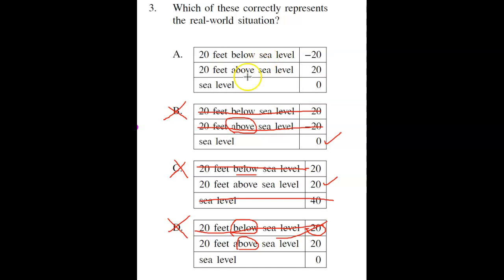When I look at A, it says 20 feet below sea level is a negative. Okay, so that one works. 20 feet above sea level is a positive. That one works. Sea level is at 0. That one works. So for this problem, letter A would be my choice.